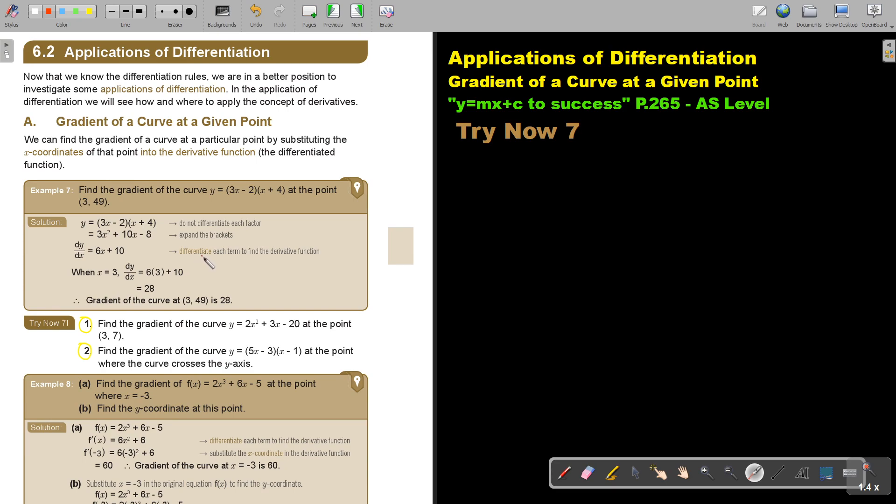Now you can find the derivative function. You can differentiate. I will get 6x plus 10 and that will become 0. Now remember to substitute the x-coordinate. What is the x-coordinate? That's 3. And I substitute it in the differentiated function. Then that value will be the gradient of the curve at that specific point.